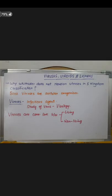If you have seen the previous video, you will know that there is a 5 kingdom classification in which there is no virus. The 5 kingdom classification was given by Whittaker, and it includes Monera, Protista, Fungi, Plantae and Animalia. The question arises: why did they not keep the virus in the 5 kingdom classification? Because viruses are acellular organisms.